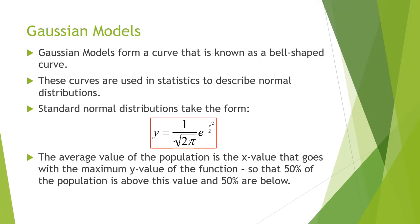The average value of the population is the x value that goes with the maximum y value of the function. So 50% of the population is above this value, and 50% are below. An example would be intelligence measurement, you have a middle ground that you expect 50% to be above and 50% to be below that.